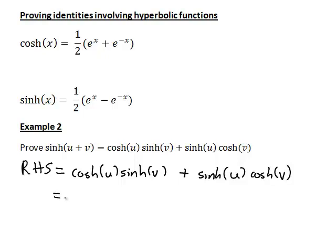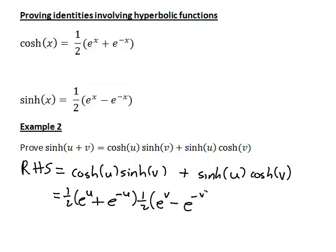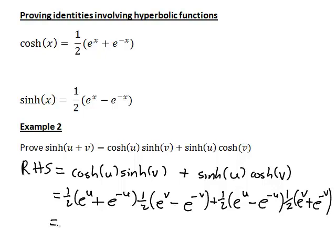Using our definitions, cosh of u becomes a half e to the u plus e to the negative u, and sinh of v becomes a half e to the v minus e to the negative v. Then sinh of u is a half e to the u minus e to the negative u, and cosh of v is a half e to the v plus e to the negative v. When we see bracketed expressions it is useful to take constant numbers to the front and expand.